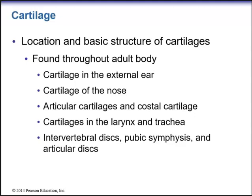Cartilage is found throughout the adult body. We can see cartilage in the external ear, and we know the different types. The cartilage found in the external ear is elastic cartilage. There's also cartilage of the nose, the articular cartilages, the costal cartilage, the cartilages in the larynx and trachea, the intervertebral discs, the pubic symphysis, and articular discs.